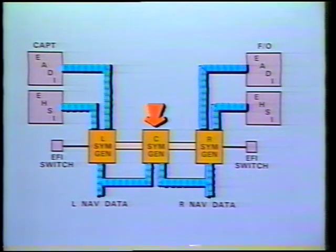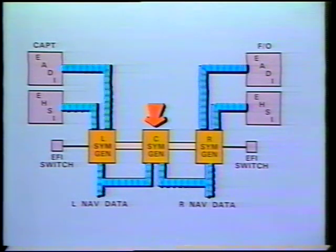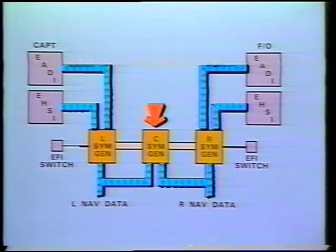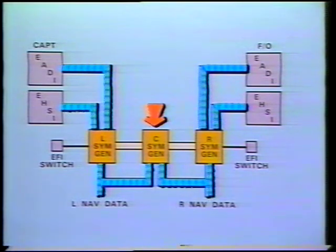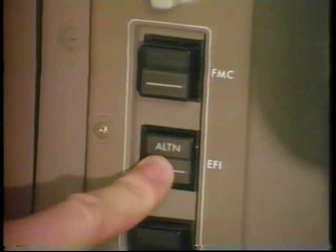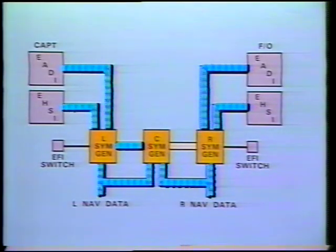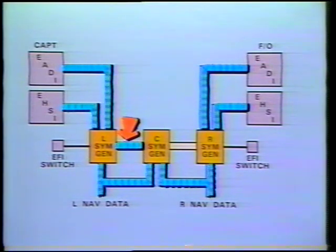A center Symbol Generator is provided as an alternate or backup unit for the left and right Symbol Generators. It is physically and electronically identical to the left and right units. Pushing the EFI switch to the alternate position selects the center Symbol Generator to provide display signals to the captain's or first officer's display units.